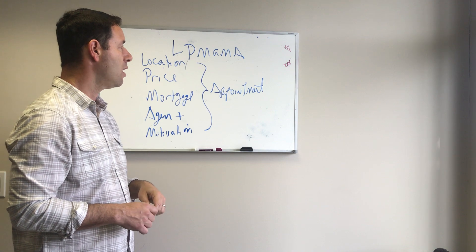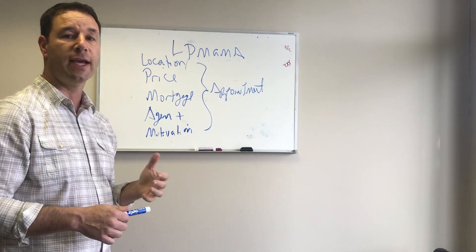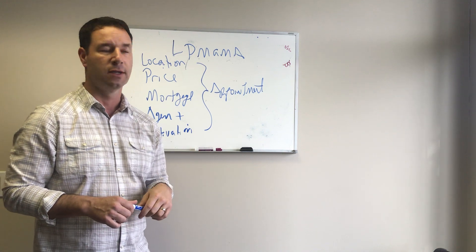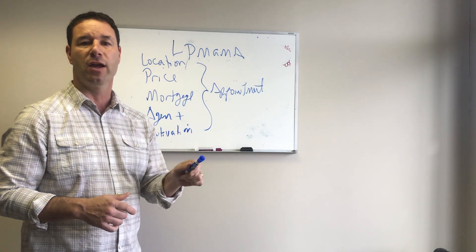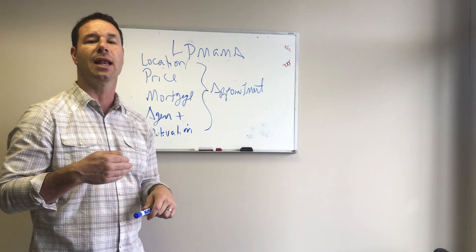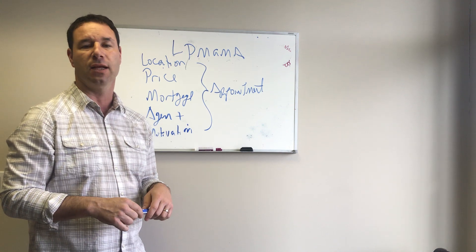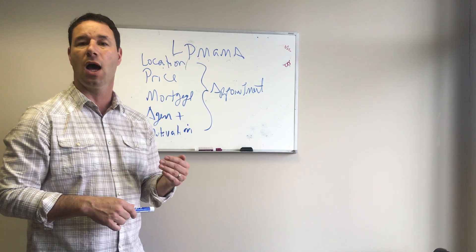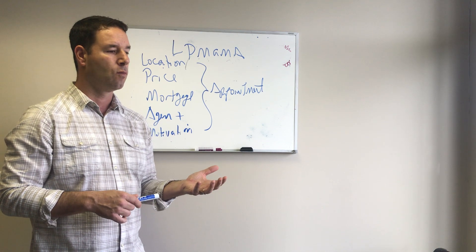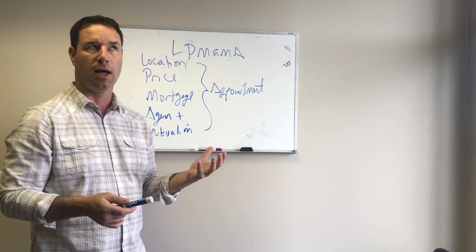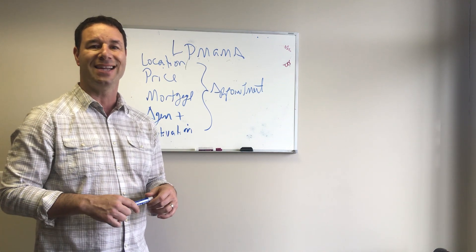So when I run out this LP Mama it talks about location, price, mortgage, agent, motivation, and appointment. And why do I always want to go through these? Since I have that framework for me that conversation's automatic and it allows me to go one or two layers deep in understanding because I'm not in my head thinking what do I say next? What do I do now? How do I do that? When you start doing that you're going to um uh you know yourself to death.